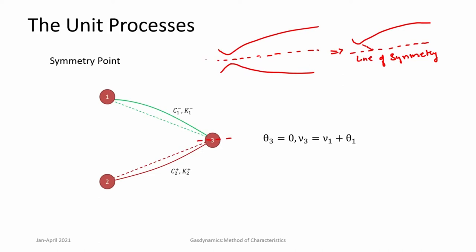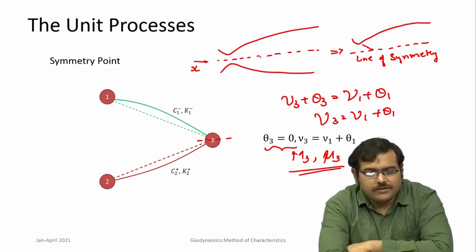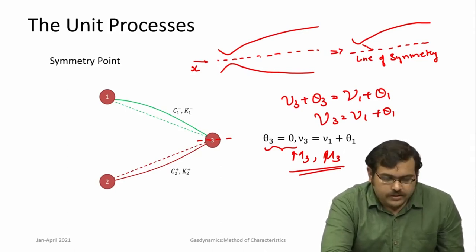If the symmetry is along the x-axis, then the angle there is 0, so theta3 = 0. Taking the C minus characteristic arriving at this point, along it theta plus nu is constant: nu3 plus theta3 equals nu1 plus theta1, but since theta3 = 0, we get nu3 = nu1 + theta1. Now you have the solution for nu3 and theta3, and from nu3 you can invert to get m3 and then mu3.